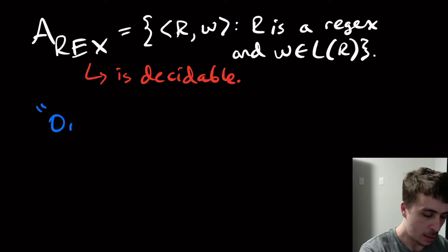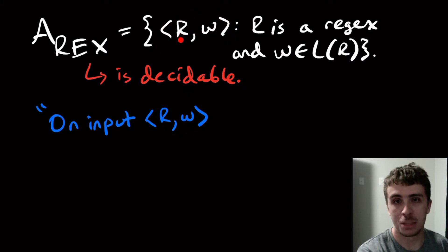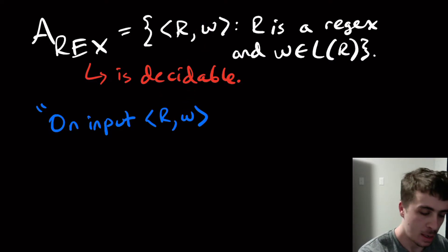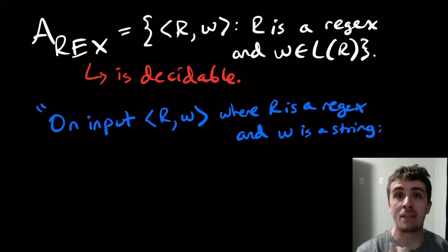So here I'm going to make a high level description just like before on input r and w, because this has to match this. It has to be a regex first and then a string second in order to solve the problem that I care about. The inputs have to match. So here where r is a regex and w is a string. And the encoding for regex is obviously going to be different than for a dfa or nfa because it has different structure.